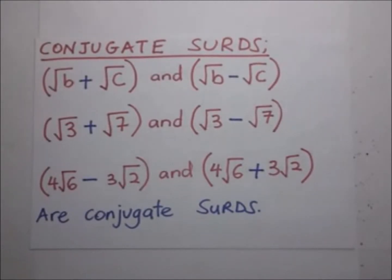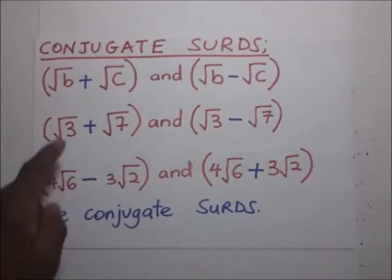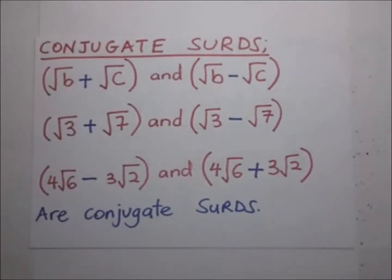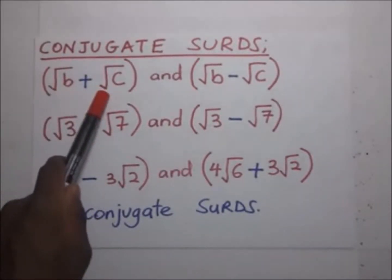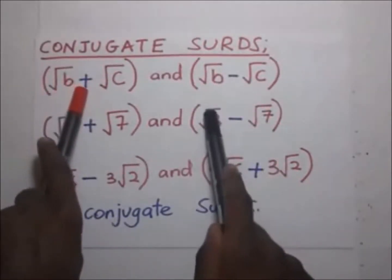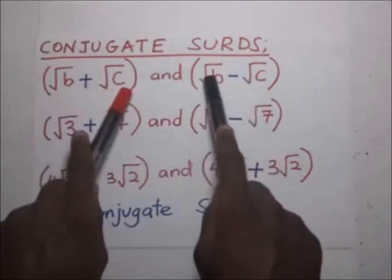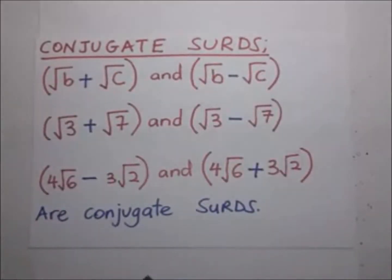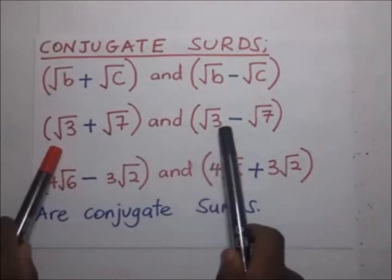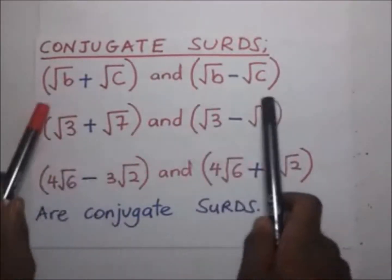Conjugate surds are simply surds that differ by either a plus or a minus sign between them. In our illustration on screen, we have root of b plus root of c, and root of b minus root of c. What separates these two is a plus in one and a minus in the other — these two are conjugate surds. One is the opposite of the other. For example, root of three plus seven and root of three minus seven are conjugate surds.